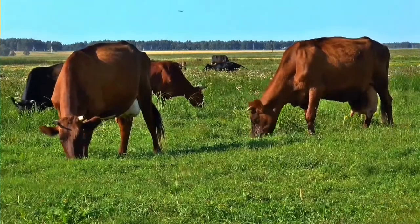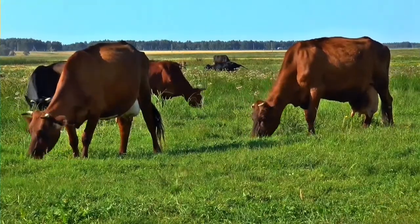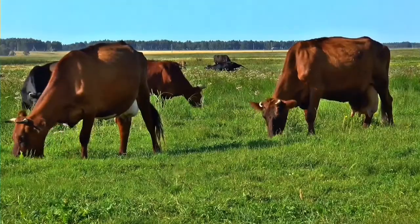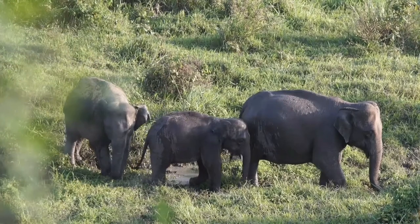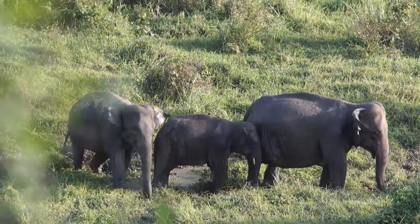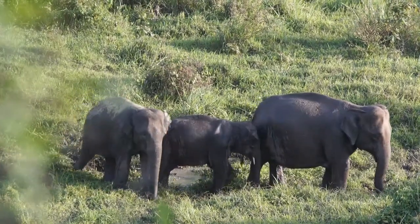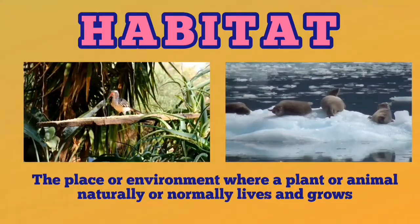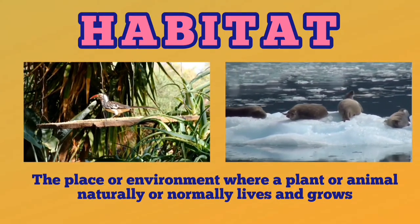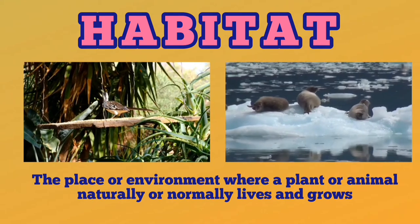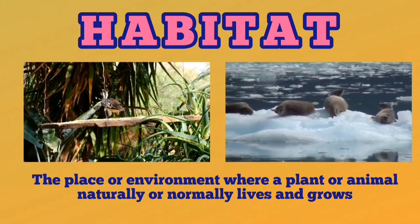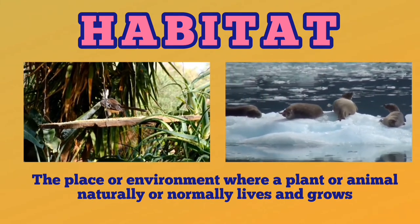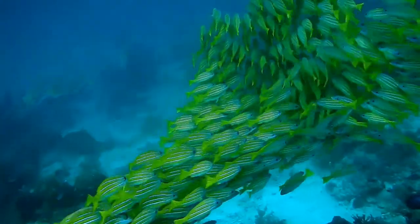Living beings are everywhere. Life exists in both extremely hot and extremely cold regions. The place or surrounding where a plant or animal lives is called its habitat. A habitat provides food, water, air, light, shelter and a place for breeding to all the plants and animals living in it.